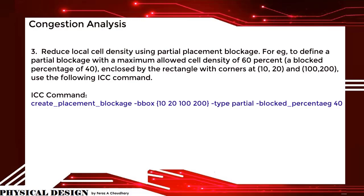Use the following ICC command: create_placement_blockage -bbox {10 20 100 200} — that is x1, y1, x2, y2 — with the type of blockage set to partial and block_percentage of 40.